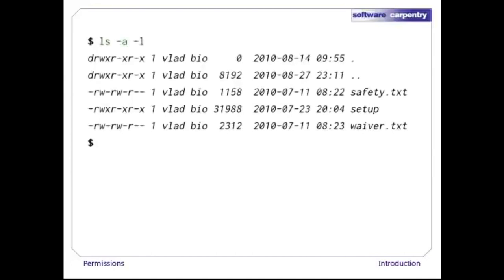Before we go any further, let's run 'ls -a -l' to get a long form listing that includes directory entries that are normally hidden. As you can see, the permissions for dot and dot-dot — this directory and its parent — start with a D. But look at the rest of their permissions — the x means that execute is turned on.